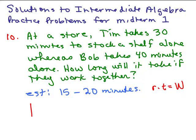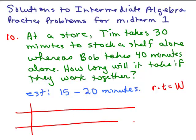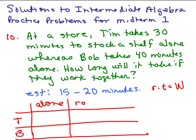So we need to keep track of the information. So we have Tim and Bob, and I like to write down how long it takes for them to work alone, and then their rate will be the reciprocal. So in other words, if it takes you 30 minutes to do something by yourself, your rate is 1/30th of the job done per minute.